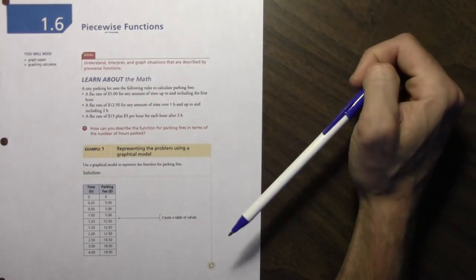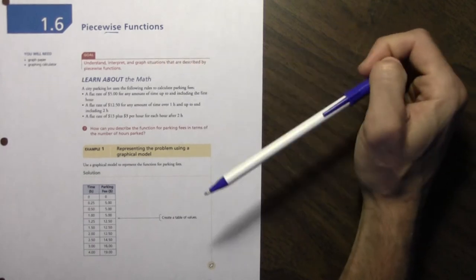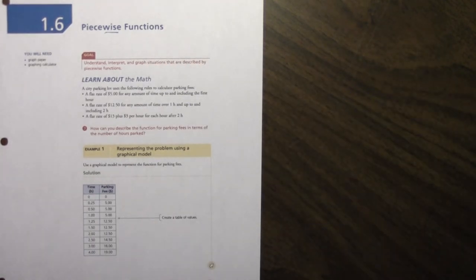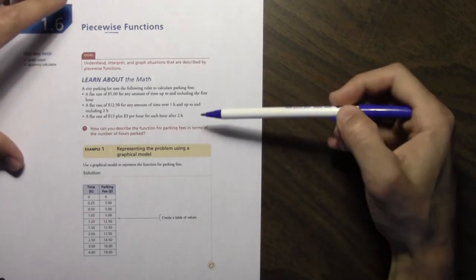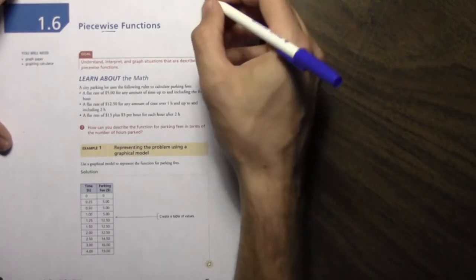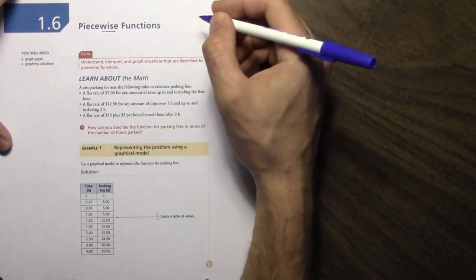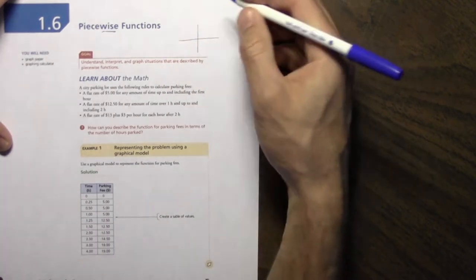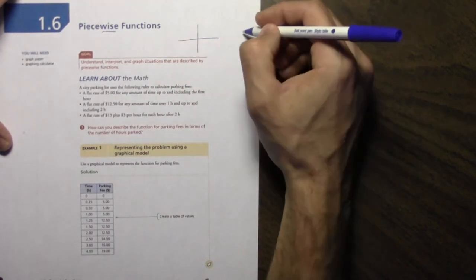We're trying to understand interpreting graph situations that are described by piecewise functions. There's not a lot to today's lesson, not a lot different. The only trick of today is that we're gonna put limits on certain functions. So we're gonna have more than one. I'm gonna explain that more in a second, but if we all know, just give us a very quick explanation of piecewise functions.